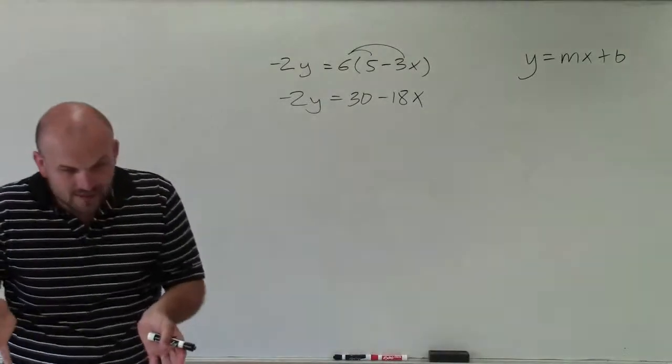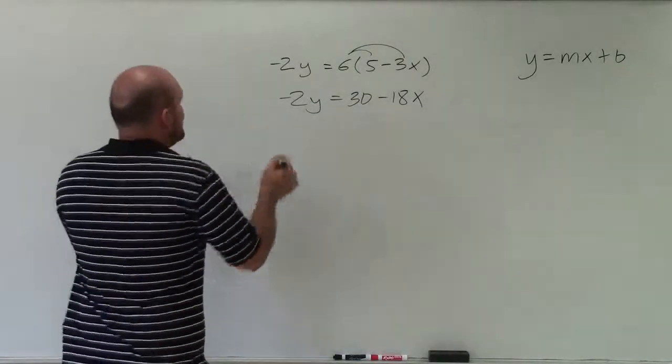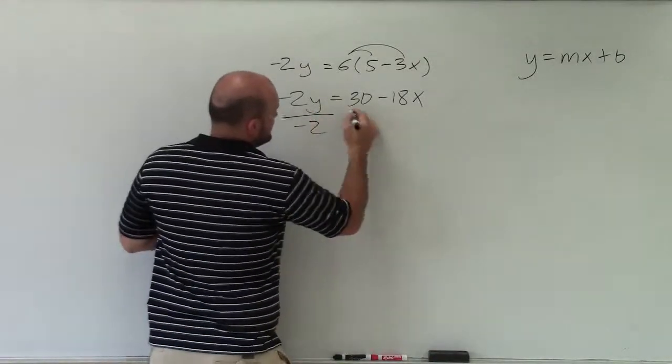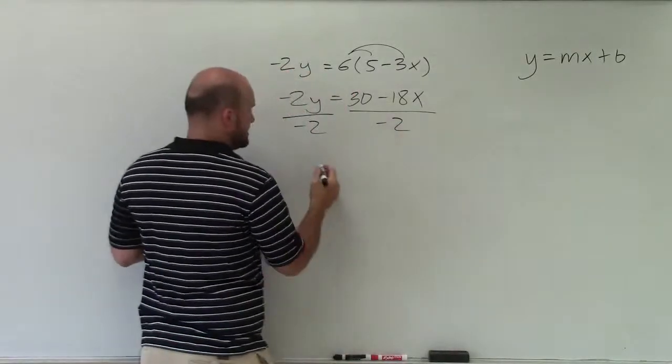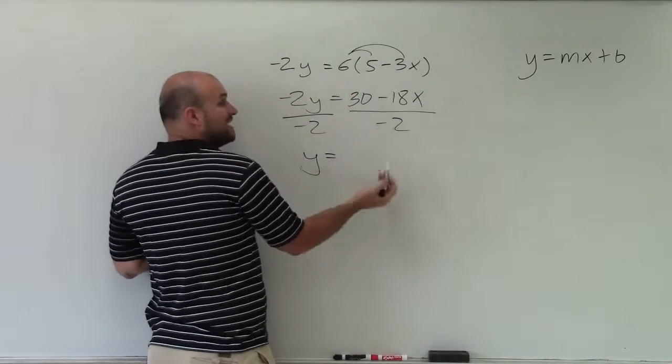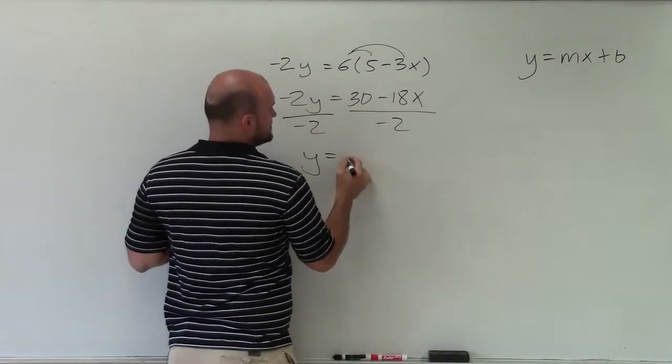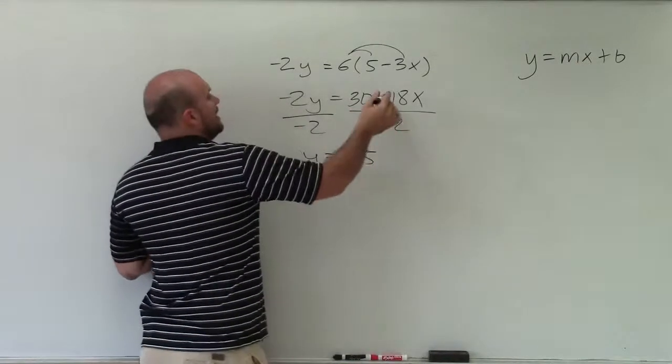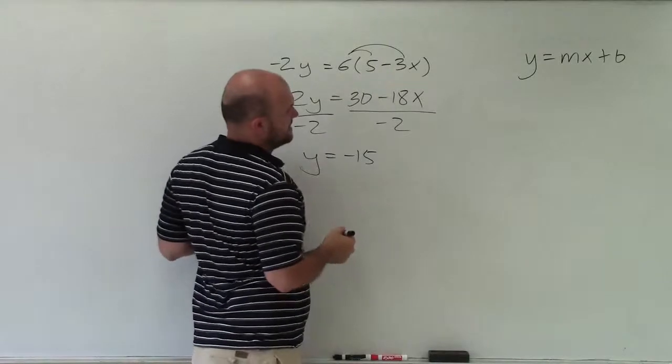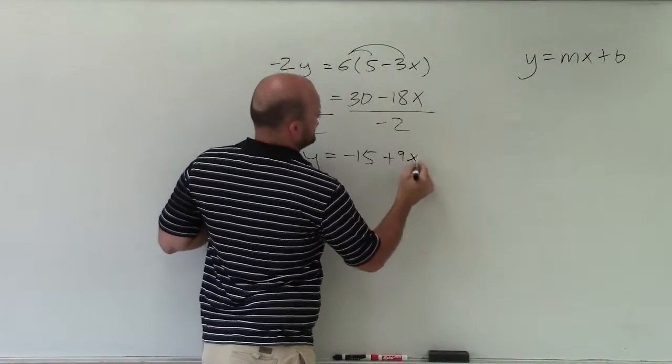All right, so now to solve for the y, I need to now undo dividing by negative 2. So I'll divide by negative 2 on both sides, and I get y equals. Now remember, the negative 2 divides into both those terms. So 30 divided by negative 2 is now a negative 15, and negative 18x divided by negative 2 is now going to be a positive 9x.